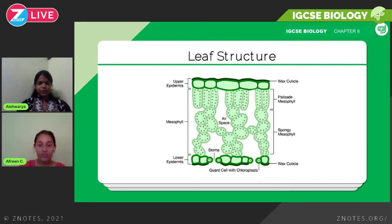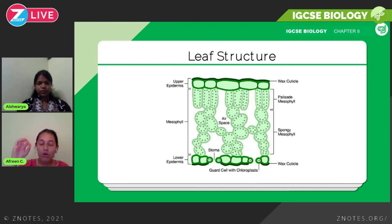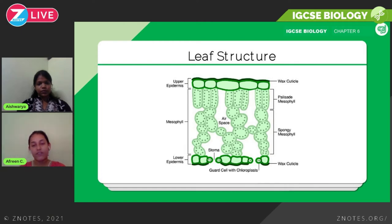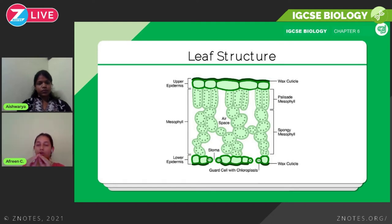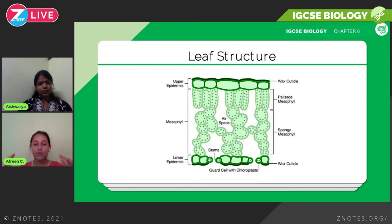The spongy mesophyll is where gases are stored. In the lower epidermis, there are holes called stomata — this is the point from which gases leave and enter the leaf. The stomata are surrounded by guard cells, which control when the stoma opens and closes. At the bottom, there is also a waxy cuticle, serving the same purpose as the one at the top — to reduce water loss.